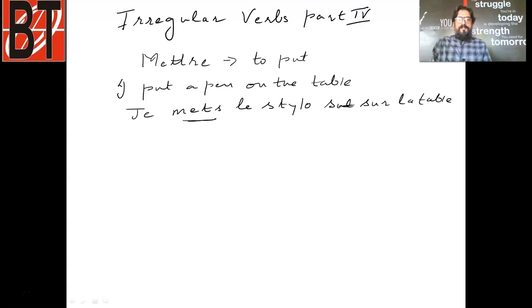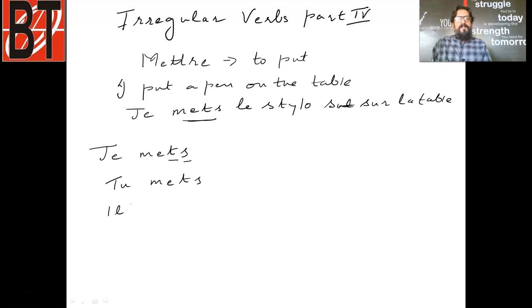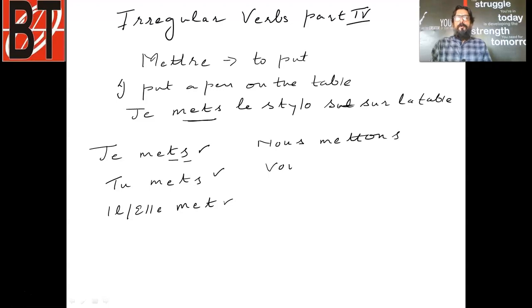Let us do the conjugation of this beautiful verb mettre. It is: je mets — don't say the t or s, always say 'mets'. Je mets, tu mets. When you say 'il', it becomes m-e-t. You remove the s but the pronunciation remains the same. So: je mets, tu mets, il met, elle met, nous mettons, vous mettez, ils/elles mettent.